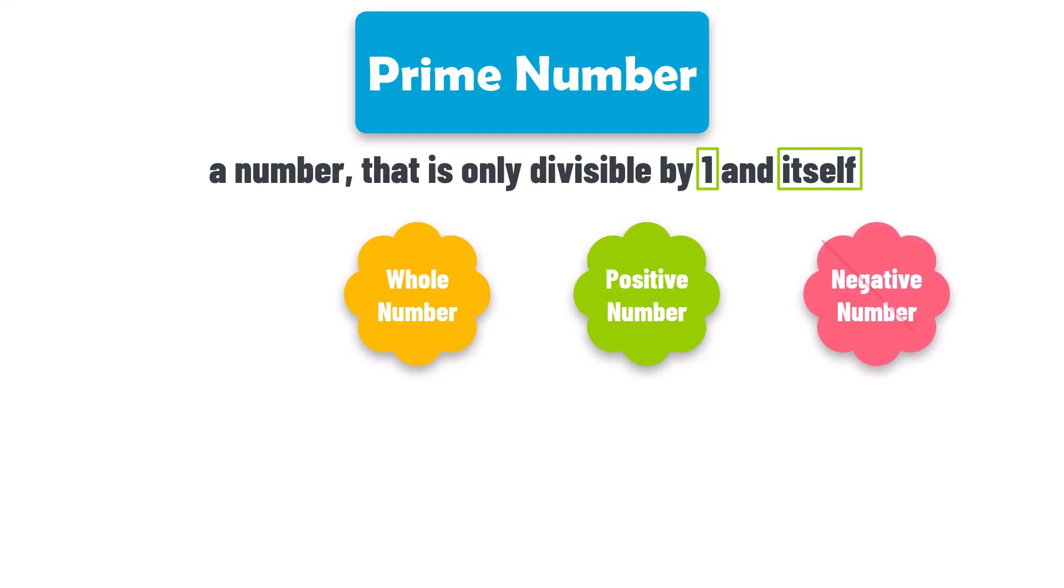So, negative numbers are not prime numbers, and decimal numbers also are not prime numbers. For example, the number 5 is a prime number, as it can only be divided evenly by 1 and 5.